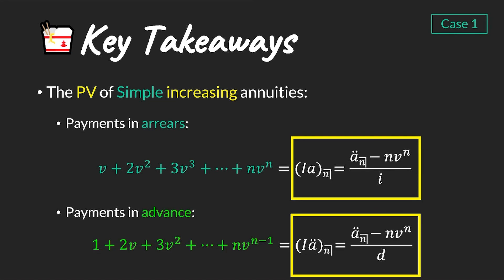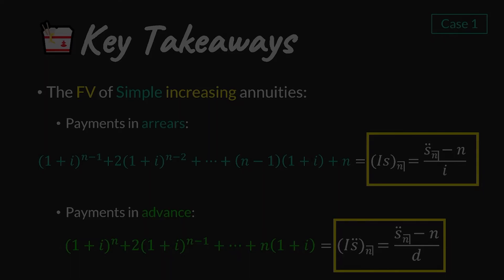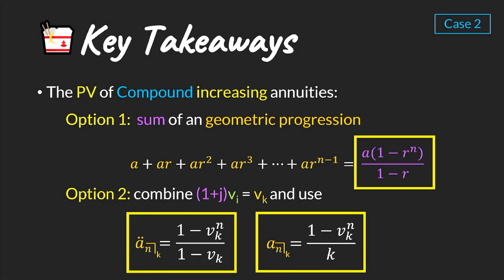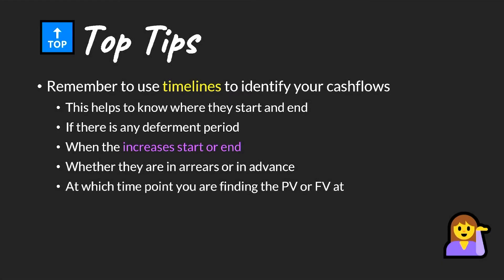To wrap up: for case one we can make use of the two simple increasing annuity formulas. The key thing to look out for is whether payments are made in arrears or in advance — you can see the two different cash flow profiles shown in teal and green, and by recognizing them you will know which increasing annuity formula to use. The same applies to the future value. For case two — compound increasing annuities — we can either use the sum of a geometric progression or combine (1 + j) and v to define a new discount factor to calculate the present value.